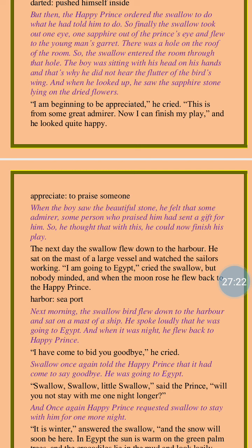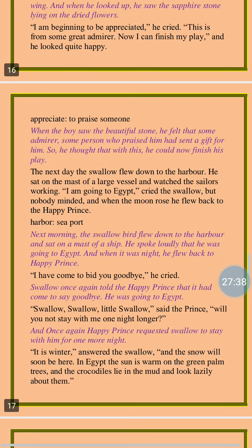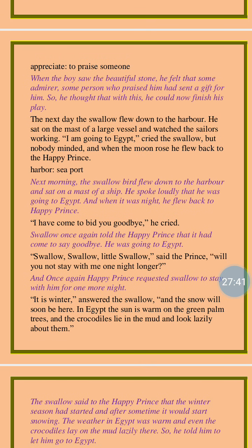'I am beginning to be appreciated,' he cried — he is the young playwright for whom the Happy Prince had helped by giving his sapphire. The young man thought it was given to him by one of his great admirers. 'Now I can finish my play,' and he looked quite happy. By getting that sapphire, the young man got very happy and thought he could finish his play very easily. The next day the swallow flew down to the harbor, sat on the mast of a large vessel, and watched the sailors working. 'I am going to Egypt,' cried the swallow, but nobody minded, and when the moon rose he flew back to the Happy Prince.